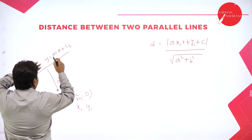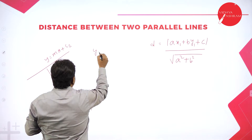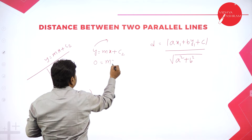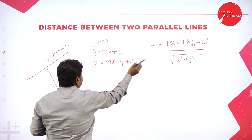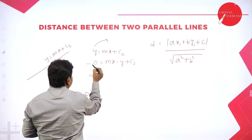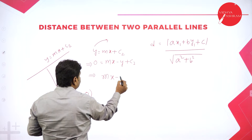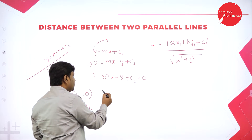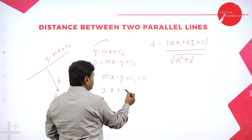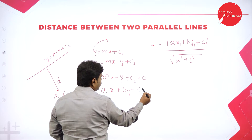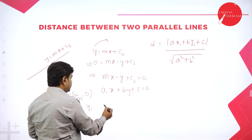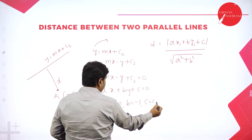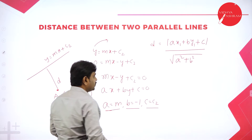The line Y equals MX plus C2 — transfer Y to the right-hand side: 0 equals MX minus Y plus C2, or MX minus Y plus C2 equals 0. This is now in general form AX plus BY plus C equals 0. So A equals M, B equals minus 1, C equals C2.